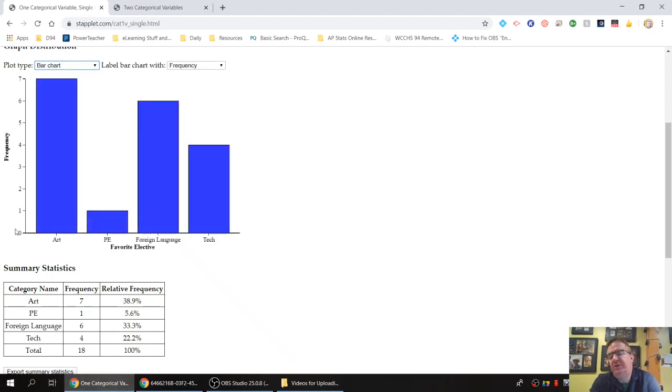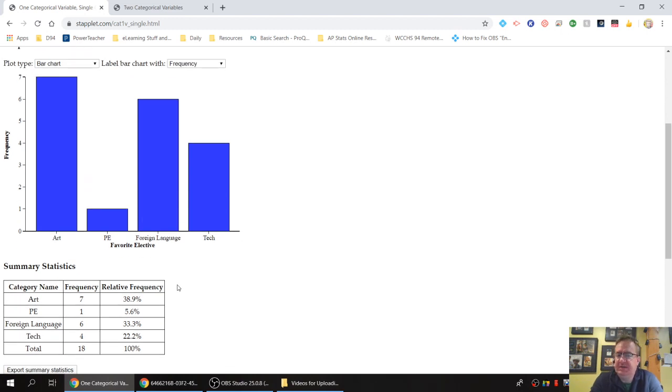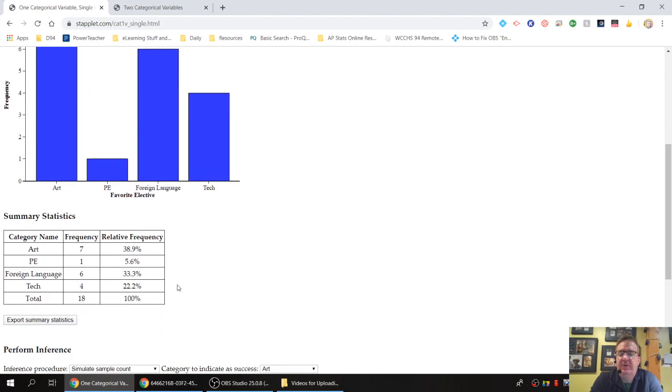Bar charts are based on frequency. Notice a couple of things here, it's starting at zero, it goes up to seven, it always has to start at zero, frequency goes up the side. There are spaces here, because it's a bar chart. We're also gonna do something called histograms in a little bit, where you won't have these spaces. That's more of a quantitative graphing item.